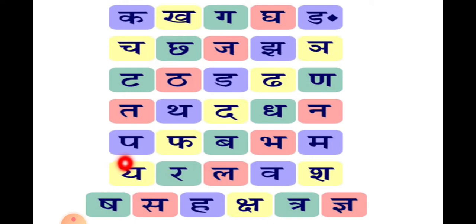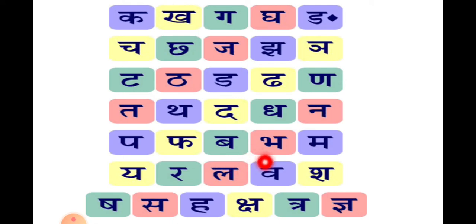Next यवर्ग — य से यज्ञ। र से रथ। ल से लड़का या लड़की। व से वन या वर्षा।